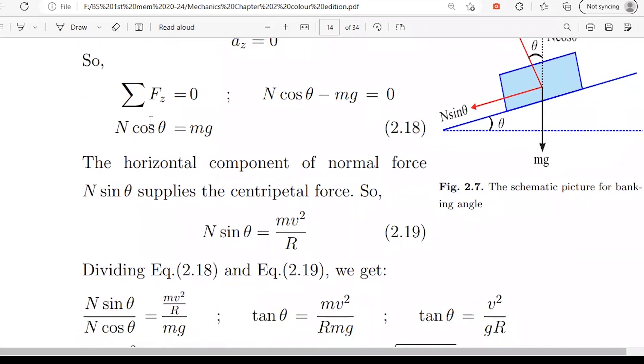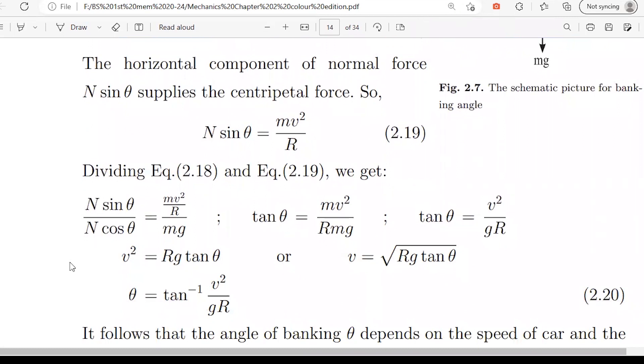N is equal to mg. Here is the N cos theta and you have the N sin theta. You have the left side and right side. So you have to divide N sin theta over N cos theta.